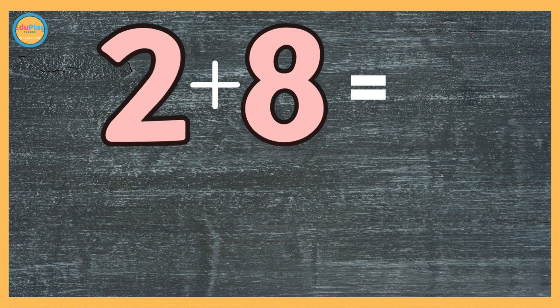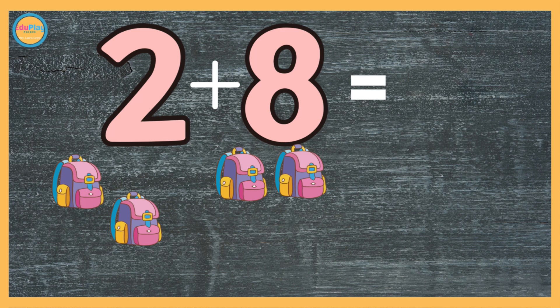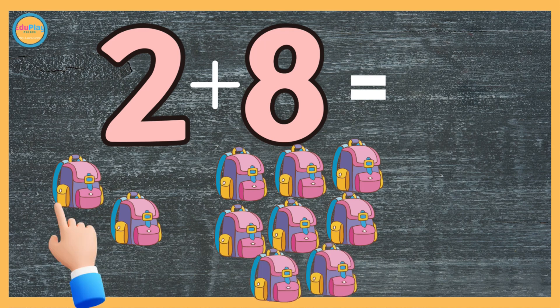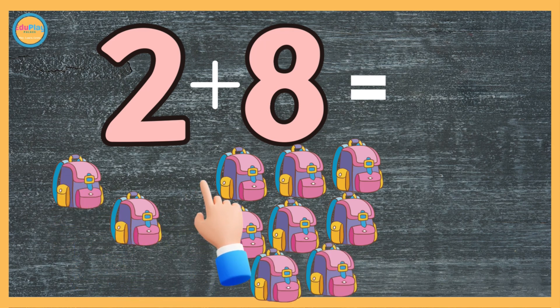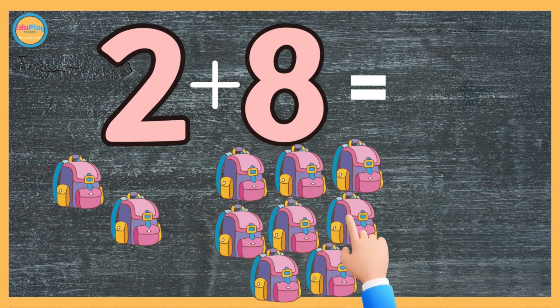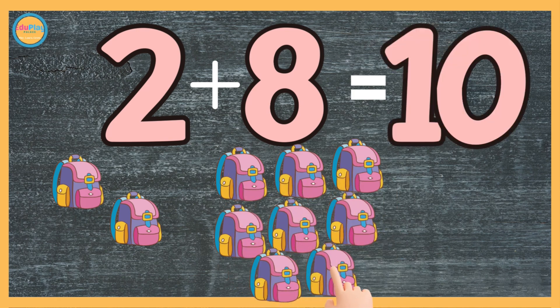2 plus 8. Count 2. 1, 2. 1, 2, 3, 4, 5, 6, 7, 8. Count together. 1, 2, 3, 4, 5, 6, 7, 8, 9, 10. 2 plus 8 makes 10.